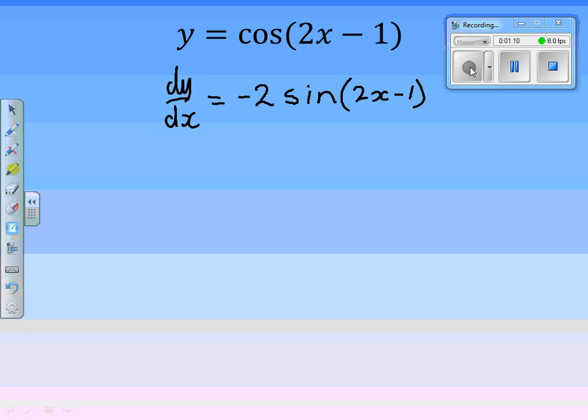Cos of something goes to minus sine of something, multiplied by the derivative of something, which is 2. So at stationary points, we have 0 is equal to minus 2 sine 2x minus 1. I can divide both sides by minus 2, and I can get basically sine 2x minus 1 is equal to 0.